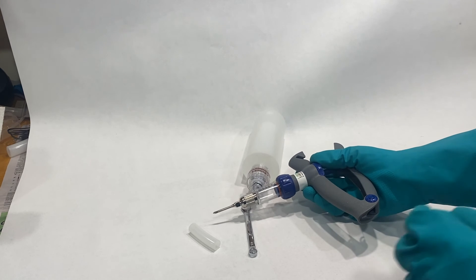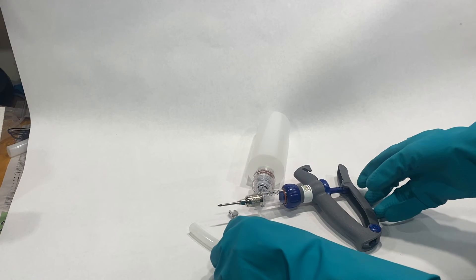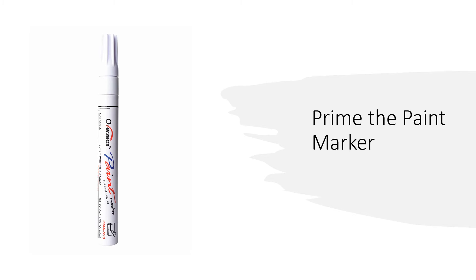Your stem injector is now ready to do injections. The final thing to do before going into the field is to prime the white paint marker that comes with the stem injector system. This is simple. Just follow the instructions on the barrel of the marker. You will use the paint marker to mark each knotweed stem with a white mark to indicate what you have treated.